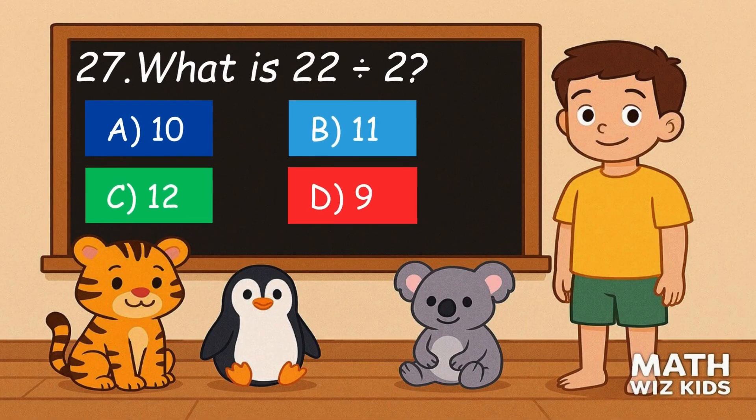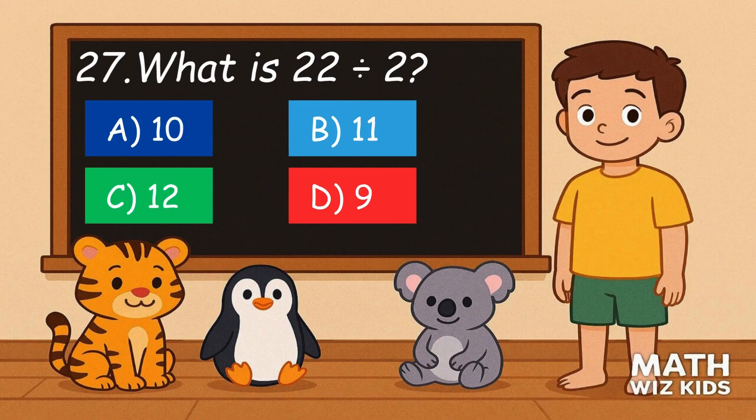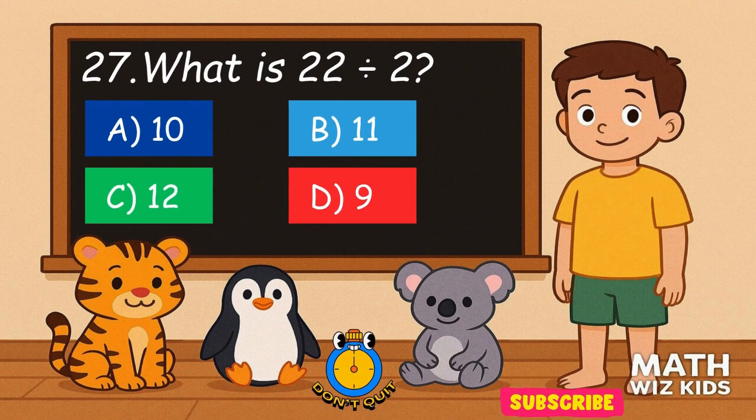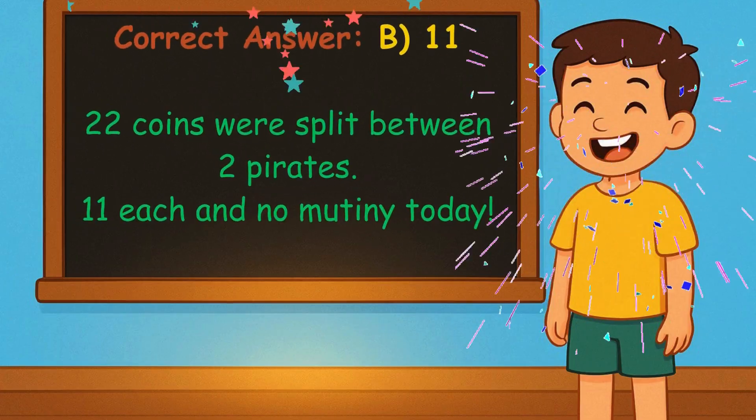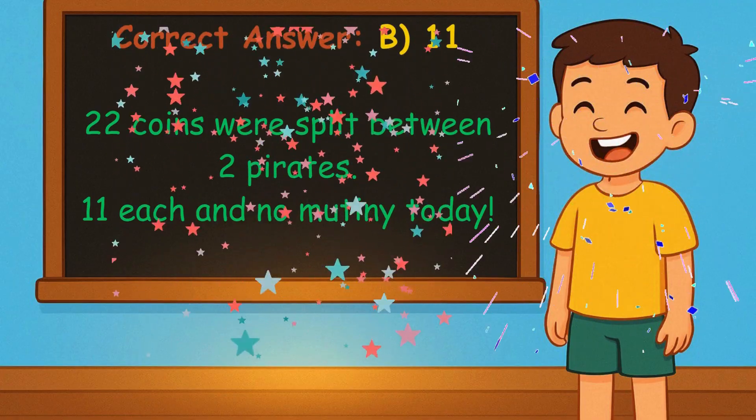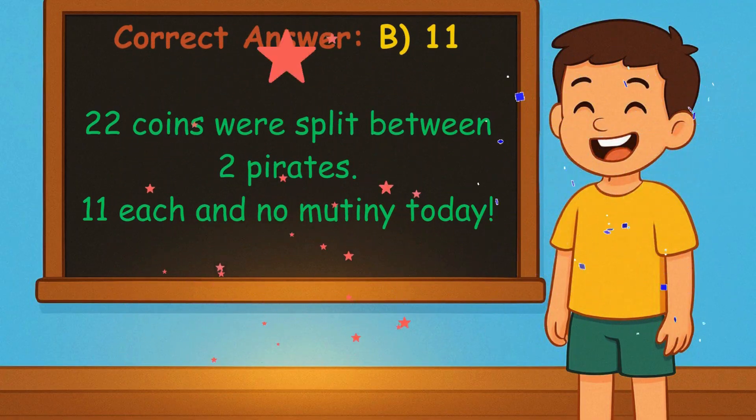27. What is 22 divided by 2? Is it A, 10, B, 11, C, 12, or D, 9? Correct answer is 11. 22 coins were split between 2 pirates. 11 each and no mutiny today.